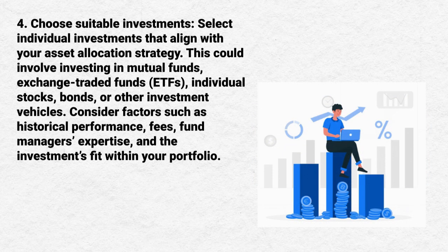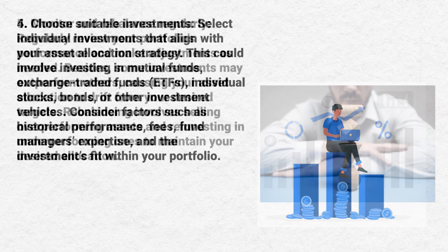Step 4: Choose Suitable Investments. Select individual investments that align with your asset allocation strategy. This could involve investing in mutual funds, exchange-traded funds, individual stocks, bonds or other investment vehicles. Consider factors such as historical performance, fund managers' expertise and the investment fees within your portfolio.